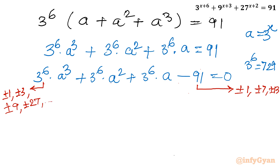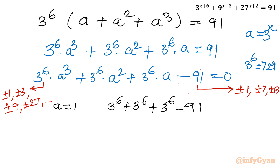To find the base solution of this cubic equation, I need to consider the ratio of constant to leading coefficient. If I consider 1/1, let me check if a = 1 satisfies the equation. Putting a = 1 gives 3^6 + 3^6 + 3^6 − 91, but 3^6 = 729, so this is not going to satisfy the equation.